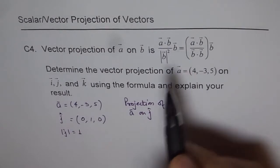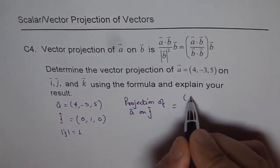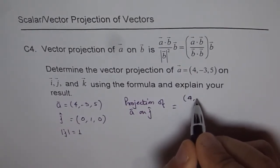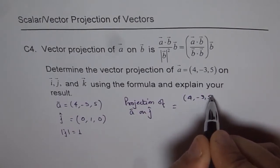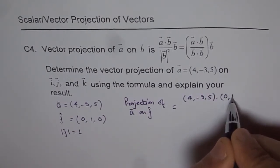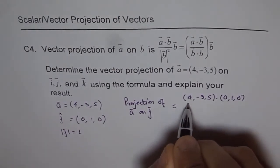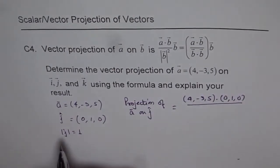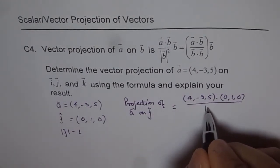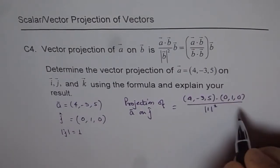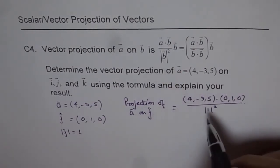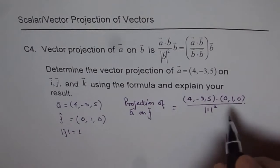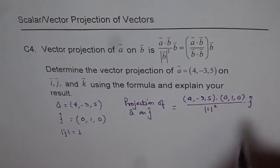It says A dot B, that means A is (4, -3, 5) dot (0, 1, 0), over magnitude of B square. B is 1, so it is magnitude of B square times vector j. So that is what we get.